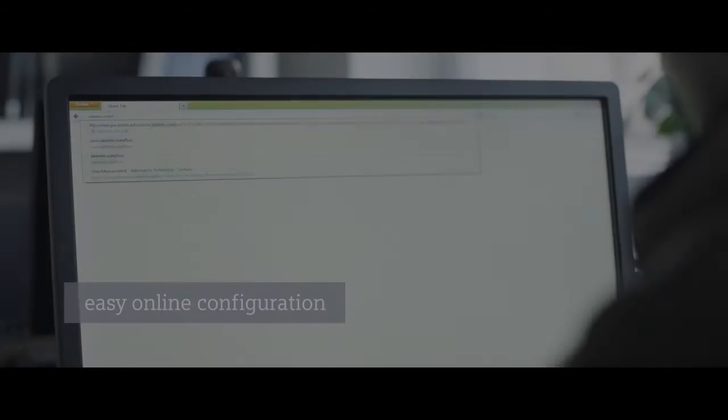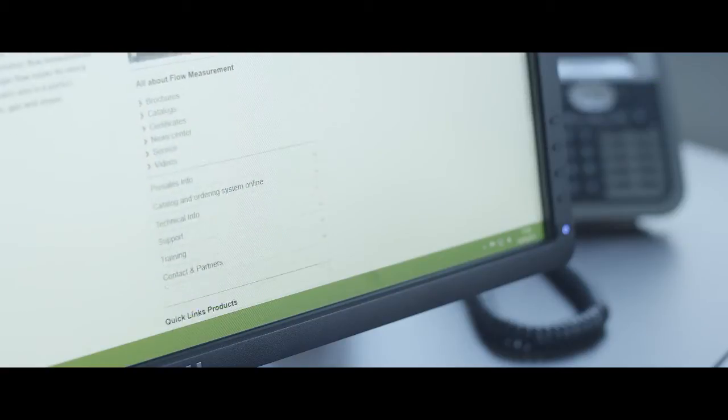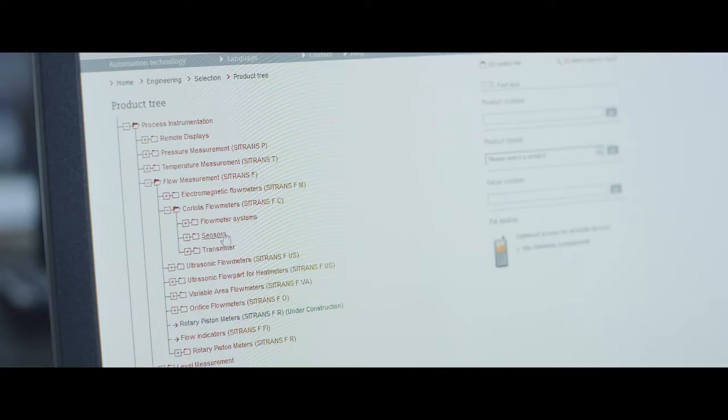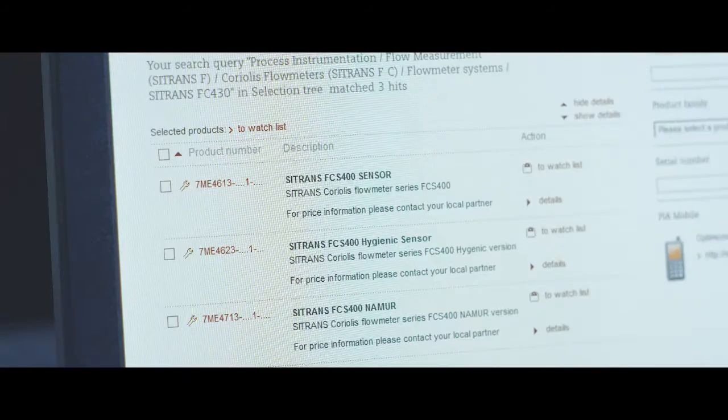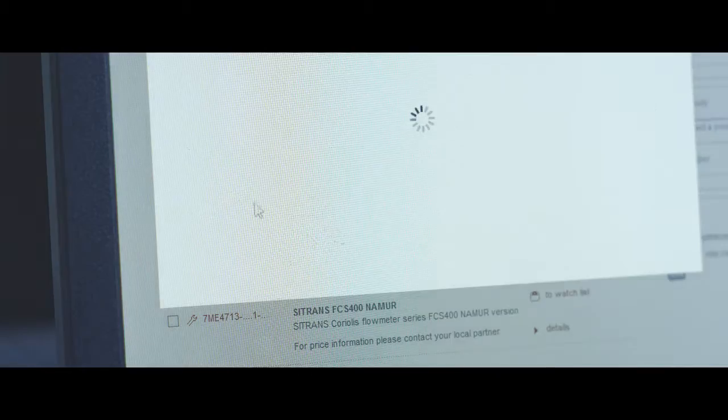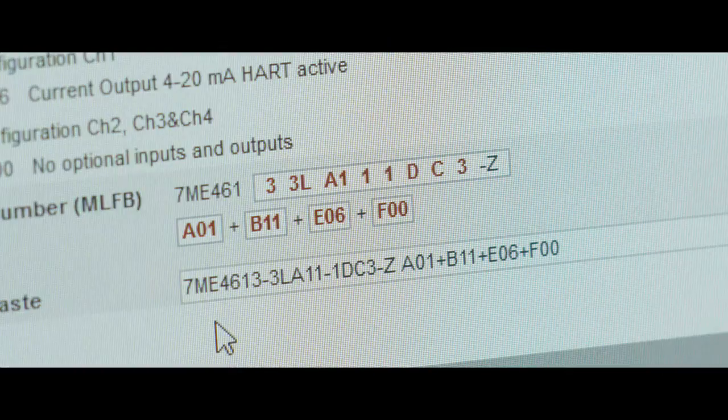Siemens offers millions of different product variations. Therefore, the scope of service includes configuration of every meter according to the customer's needs. The digital and highly automated production process ensures short delivery times and consistently high quality.